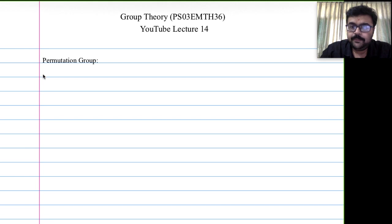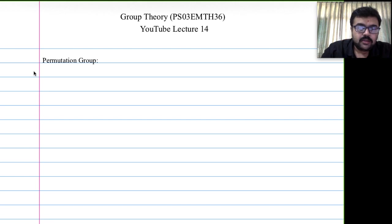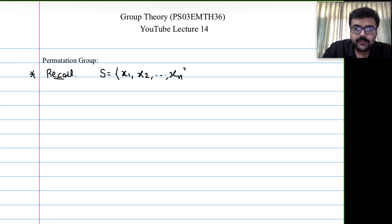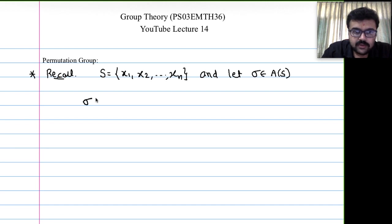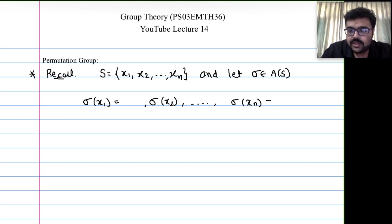Welcome to Group Theory Lecture 14. We recall permutation groups, which we have already seen in Unit 1. If S is a set {x1, x2, ..., xn}, then A(S) is the set of one-to-one functions from S to S. Let sigma be in A(S). Then sigma gives n images, all distinct because sigma is a bijective function.